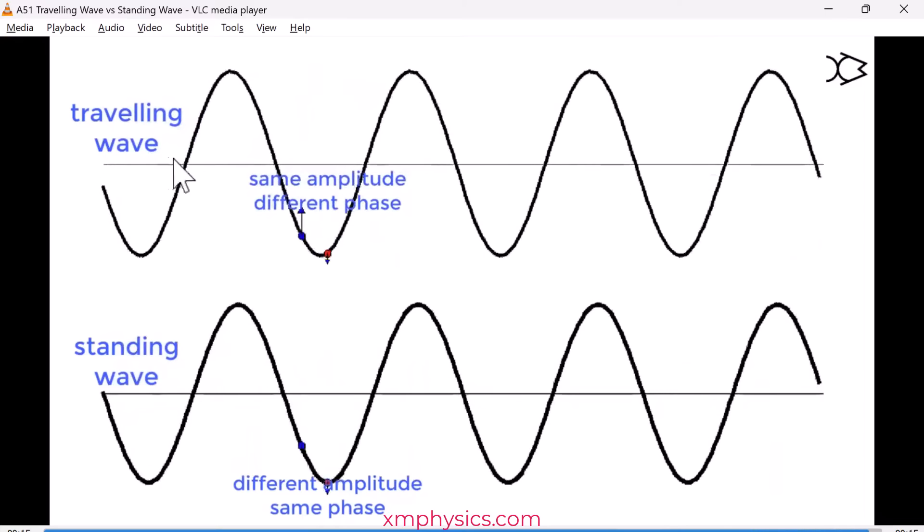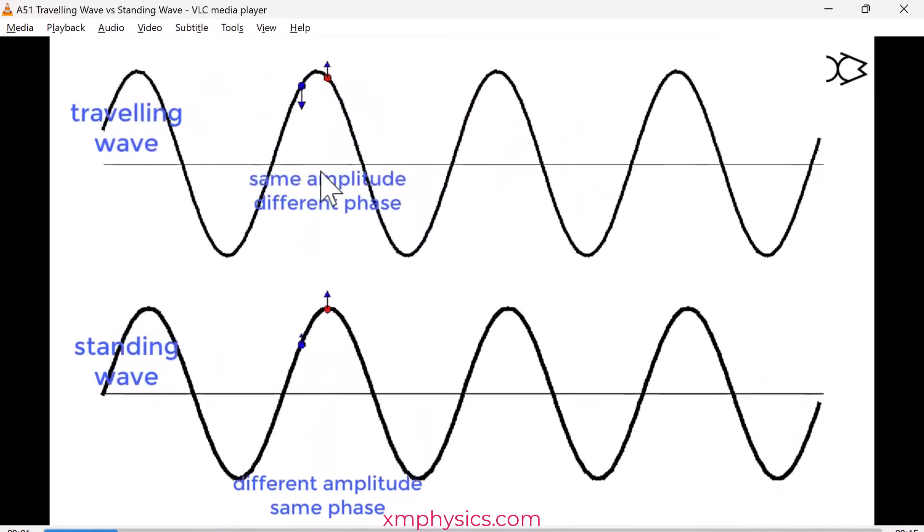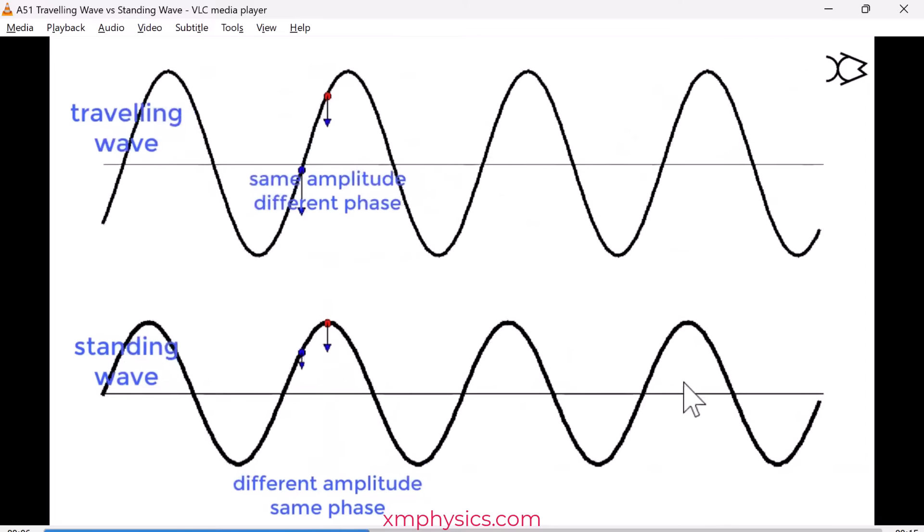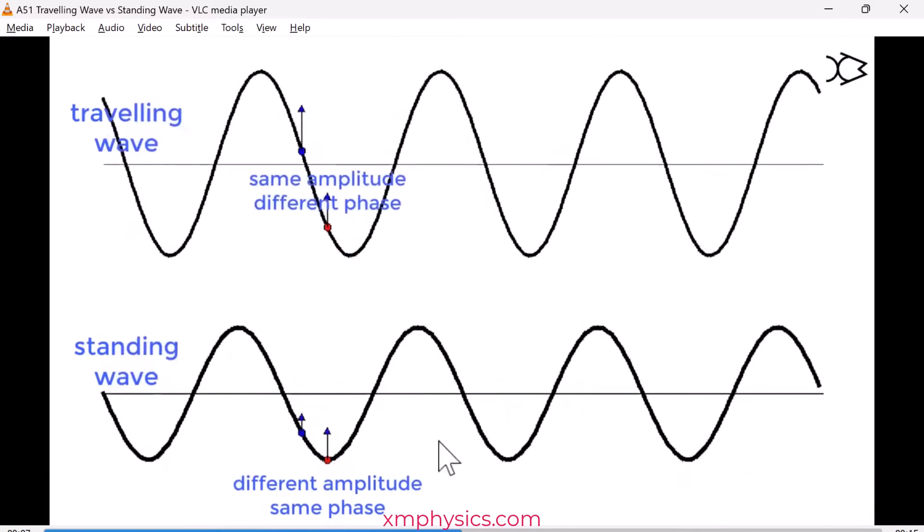So a traveling wave, we say, propagates some energy or momentum along the wave. For a standing wave, the energy is trapped within the wave.